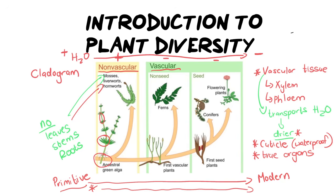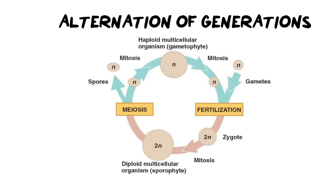Speaking of reproduction, let's unpack alternation of generations so you can progress onto the different life cycles successfully. Alternation of generations literally means how a plant lives its life as an adult — the adult generation — and then grows a reproductive organ so that it can make more of itself — the baby generation. It's easier to grasp when we look at flowers, seeds, and pollen. We need to take our knowledge about cells and how reproduction works and apply it to plants.